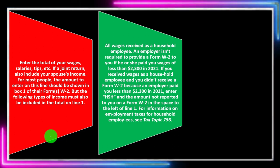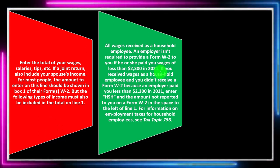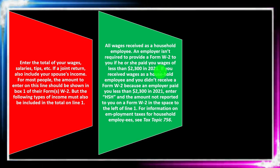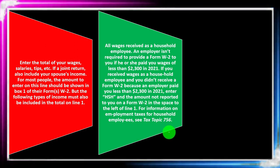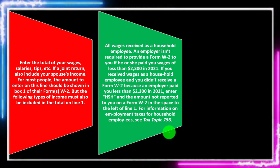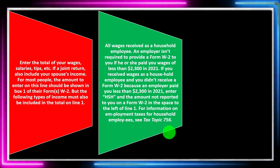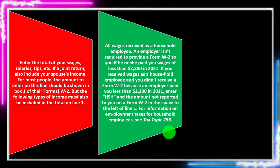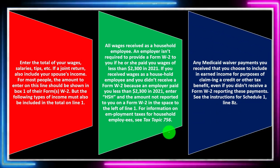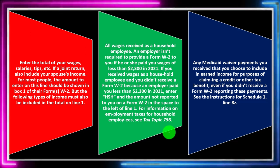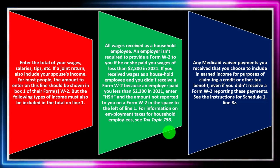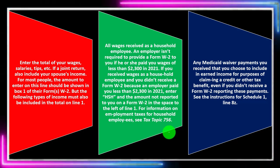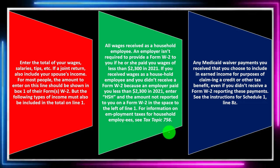All wages received as a household employee must be included. An employer isn't required to provide a W-2 if they paid you less than $2,300 in 2021, but you still need to report that income. If you received wages as a household employee without a W-2 because payment was under $2,300, enter 'HSH' and the amount to the left of line one. Also, any Medicaid waiver payments you choose to include as earned income for claiming a credit or other tax benefit must be included, even without a W-2 — this matters because earned income can increase benefits like the Earned Income Tax Credit.